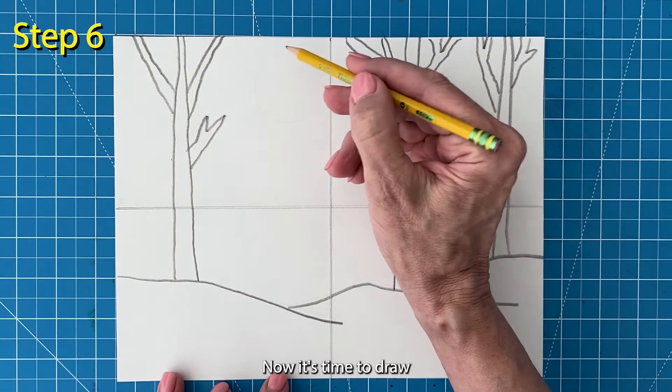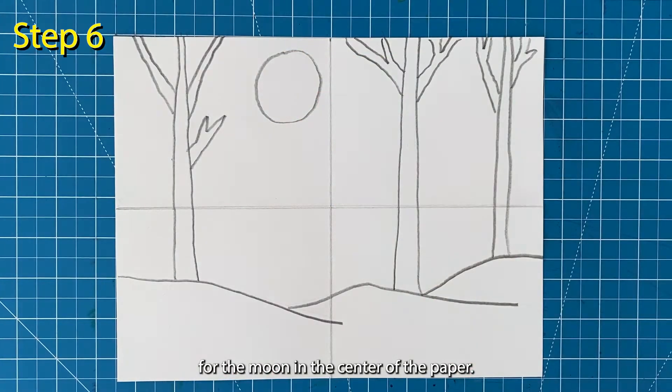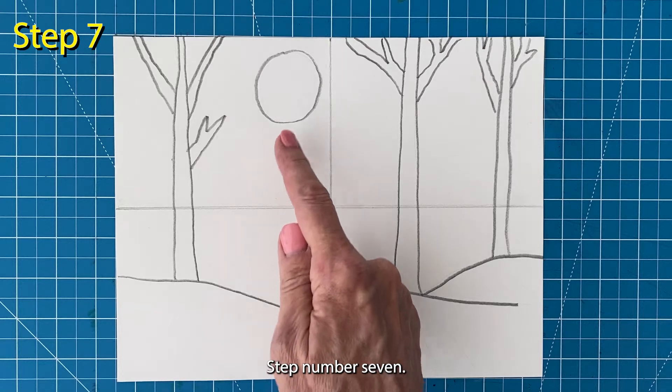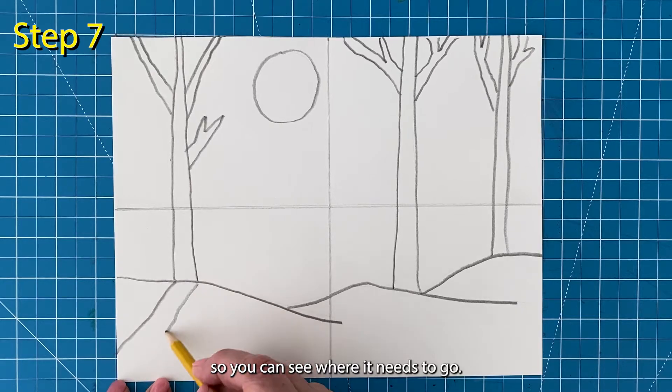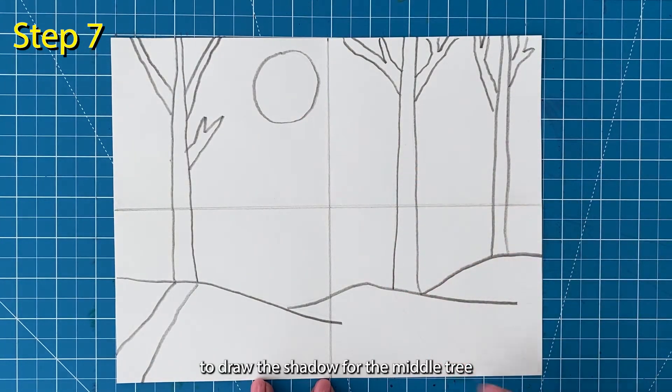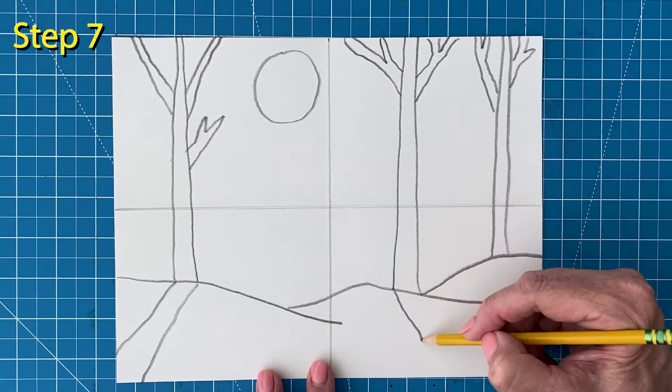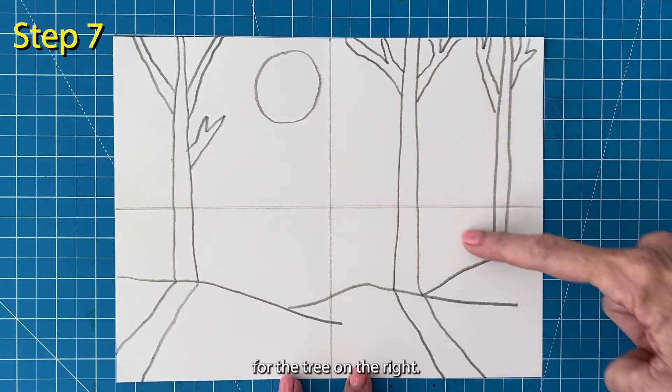Step number six. Now it's time to draw your best circle for the moon in the center of the paper. Step number seven. Draw a shadow for the left tree. Imagine light coming from the moon so you can see where it needs to go. Use the same plan to draw the shadow for the middle tree. And then the same plan for the tree on the right.